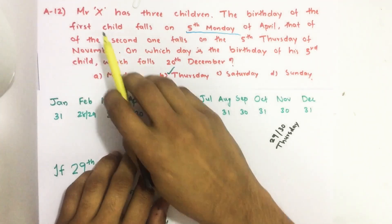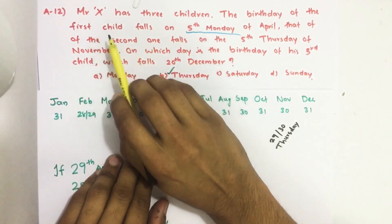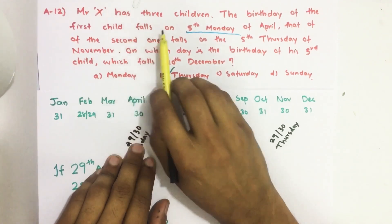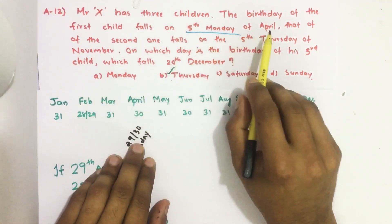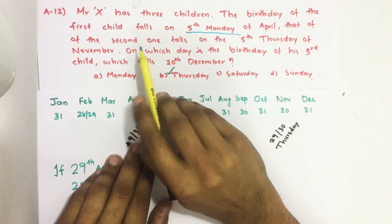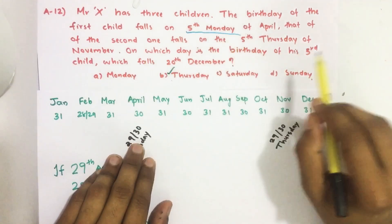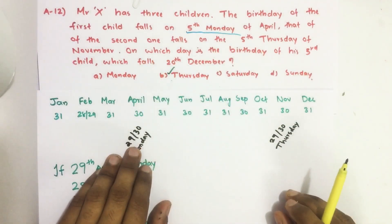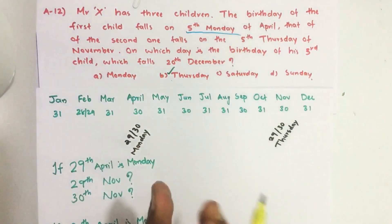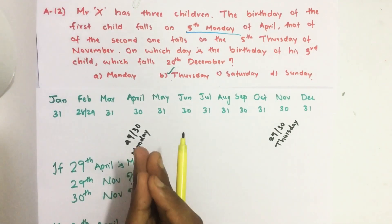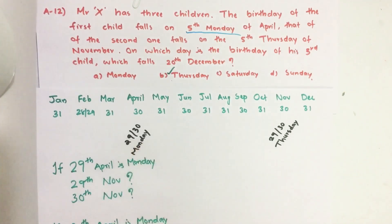So here in this question, the first child's birthday falls on the 5th Monday of April and the second one's birthday falls on the 5th Thursday of November. That means in that year, April has 5 Mondays and November has 5 Thursdays.